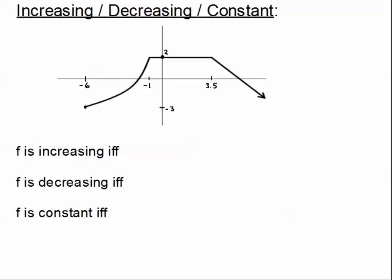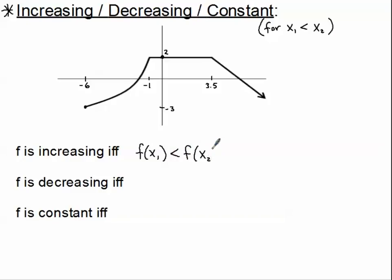Next, we're going to be looking at increasing, decreasing, and constant intervals. In this graph, we're going to say that when I use x₁, we're talking about x₁ being on the left of x₂. So when we're talking about the function increasing, a function is increasing if and only if f(x₁) is less than f(x₂). Which means that as long as x₁ is on the left side of x₂, and the function value of the first one is less than the function value of the second one, then we have an increasing part.